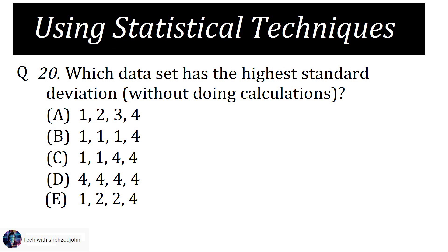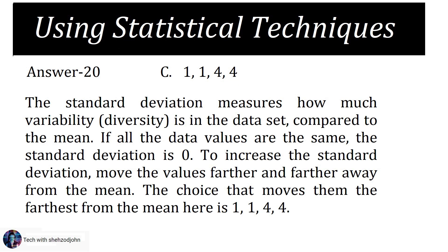Options: (A) 1, 2, 3, 4 — (B) 1, 1, 1, 4 — (C) 1, 1, 4, 4 — (D) 4, 4, 4, 4. Answer 20: Choice C, which is 1, 1, 4, 4. The standard deviation measures how much variability or diversity is in the data set compared to the mean.